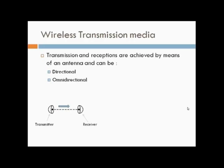In omnidirectional transmission, waves propagate in all directions using signals of lower frequencies and can be received by many antennas.